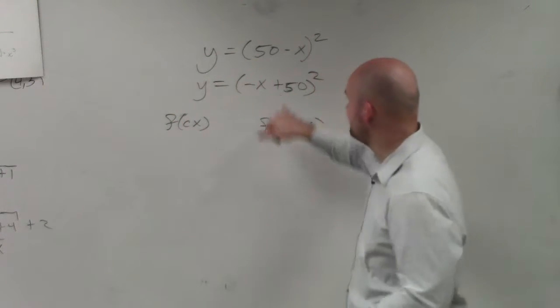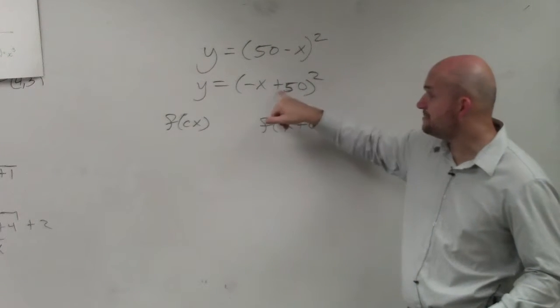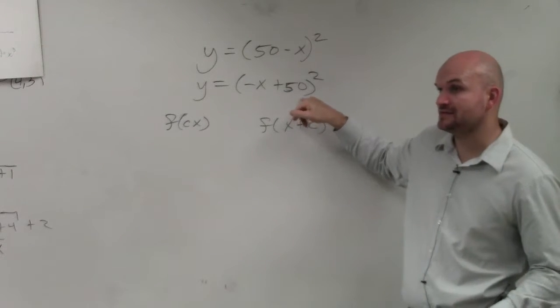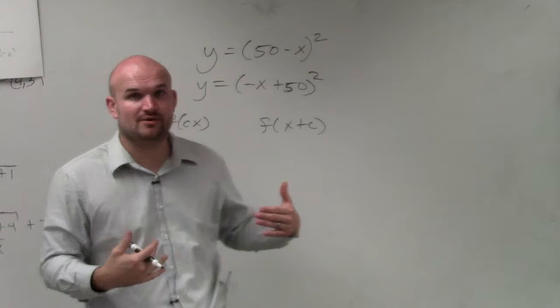Do you guys see how I am multiplying my variable x by a negative, as well as I'm adding a 50 to it? So in our notes last class, you can see that there are two transformations that's going on.